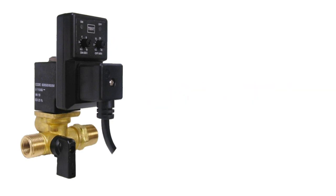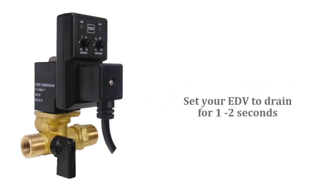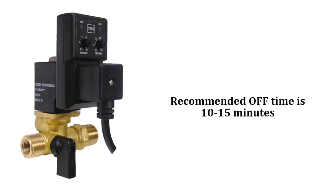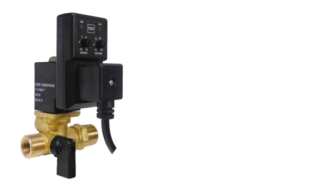Set your EDV to drain every one to two seconds. The recommended off time is 10 to 15 minutes in a typical air system. Reduce the off time if you have more water in your system.